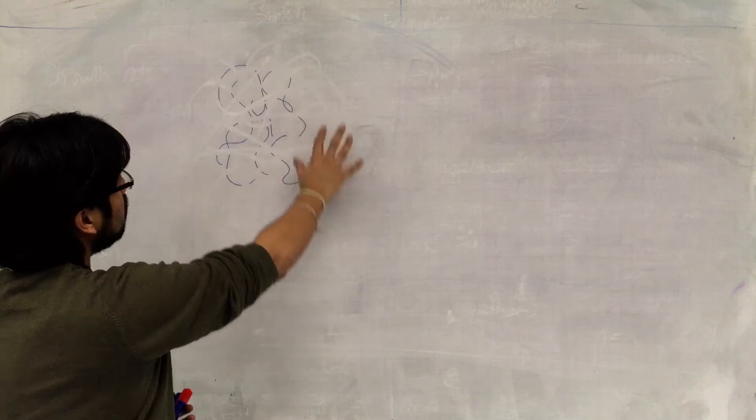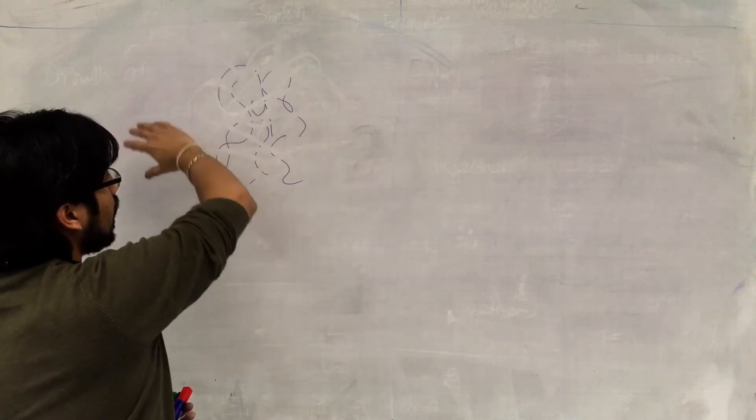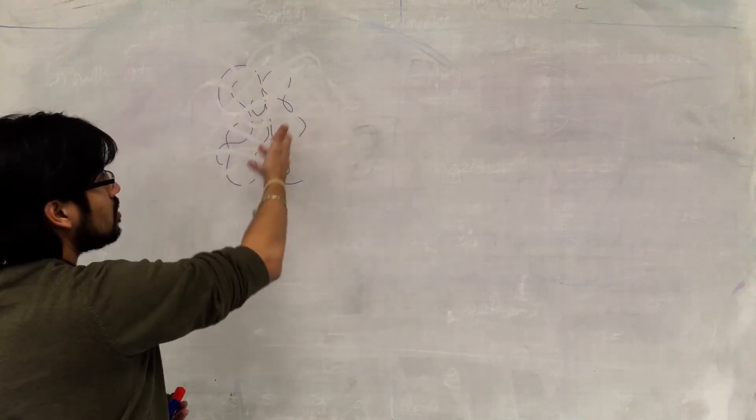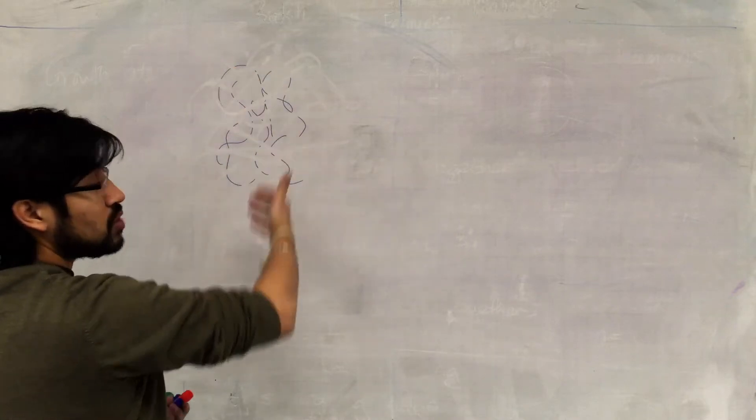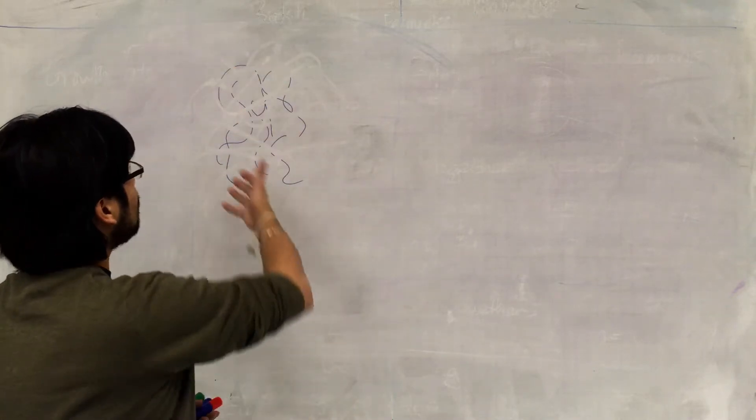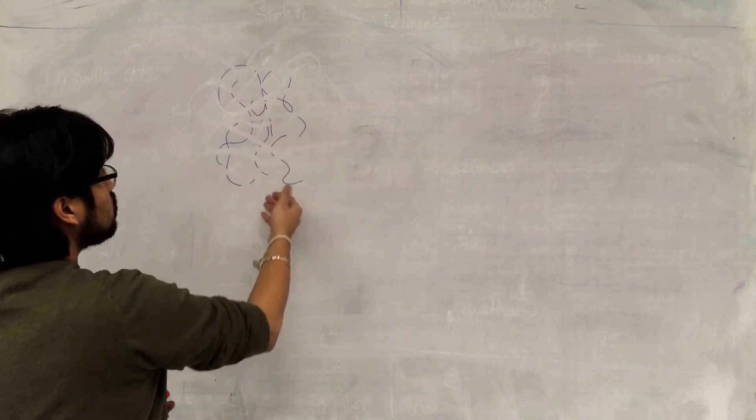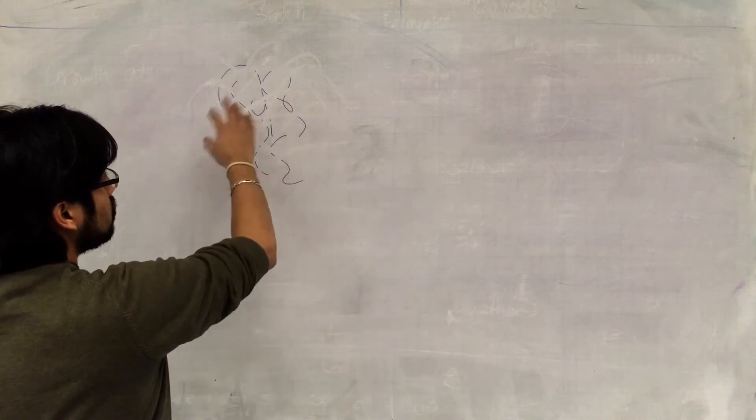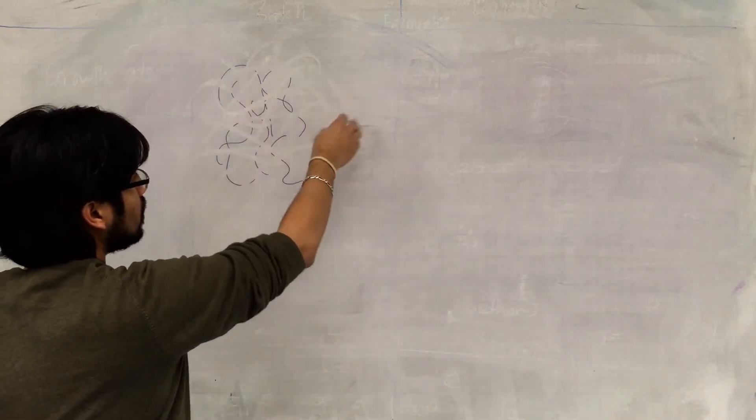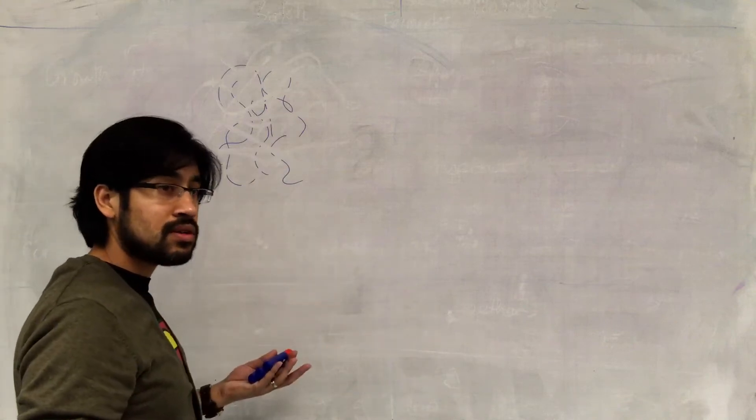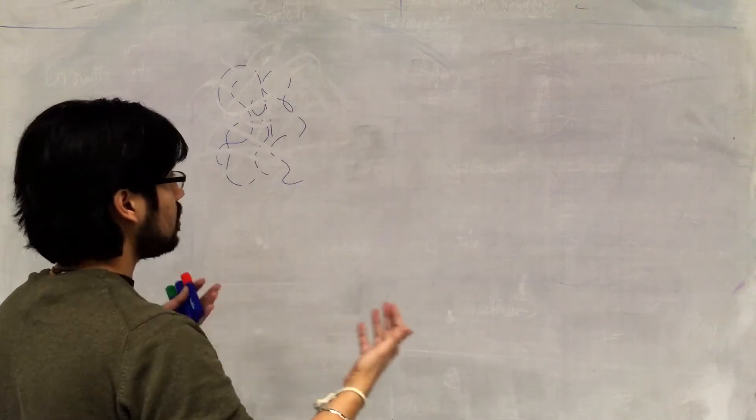So we've got our genomic DNA here, and we've treated it with restriction endonucleases that have digested the molecules down into smaller fragments, but they're of varying sizes. So how do we separate this DNA?